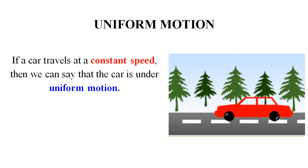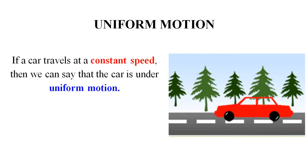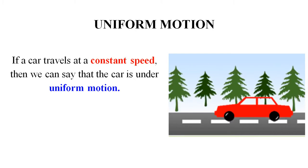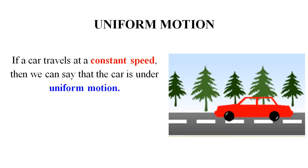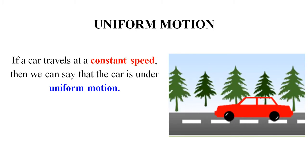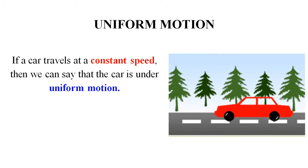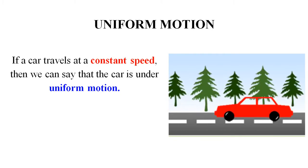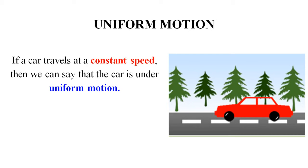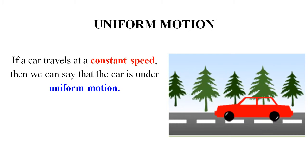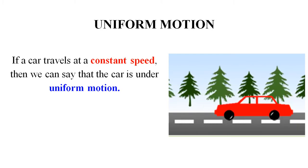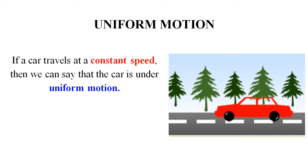Uniform motion is very simple — uniform means constant. A body is said to be under uniform motion if it travels at constant speed. If a car travels at constant speed, then we can say that the car is under uniform motion.